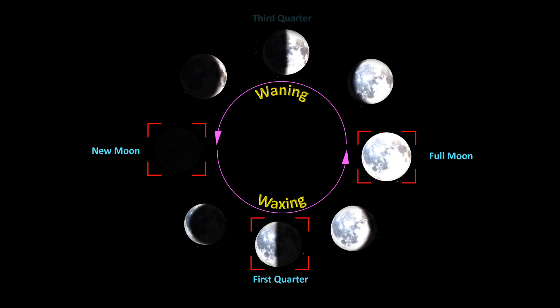The intermediate phase between full moon to new moon is known as the third quarter, or last quarter. As the moon completes the third quarter of its cycle, in this phase, the other half of the moon is visible from the earth. It takes around a week from the full moon to this phase. These are the four major phases of the moon.